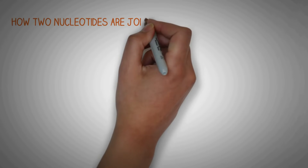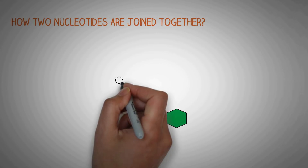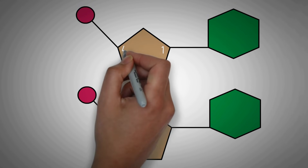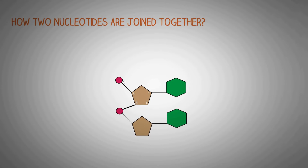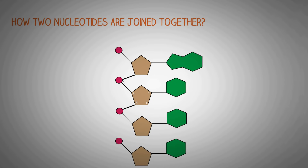To understand the structure in more detail, you need to understand how two nucleotides are joined together. The carbons present inside the deoxyribose sugar of the DNA are numbered from 1 to 5 in the clockwise direction. This numbering is important because it helps you understand the concept of directionality of DNA. The third carbon in every deoxyribose sugar forms a bond with the phosphate group of another nucleotide below it.